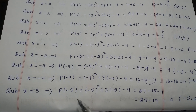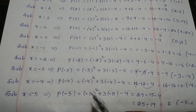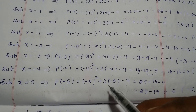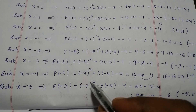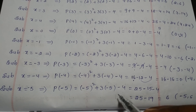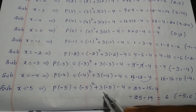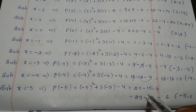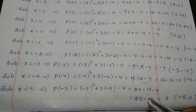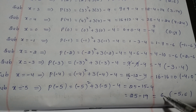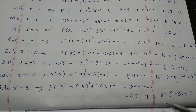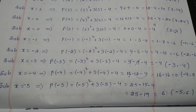If x is minus 5: minus 5 square plus 3 into minus 5 minus 4. Minus 5 square is 25, plus into minus is minus, 3 into 5 is 15, minus 4. So 25 minus 19 gives 6. The point is minus 5 comma 6.